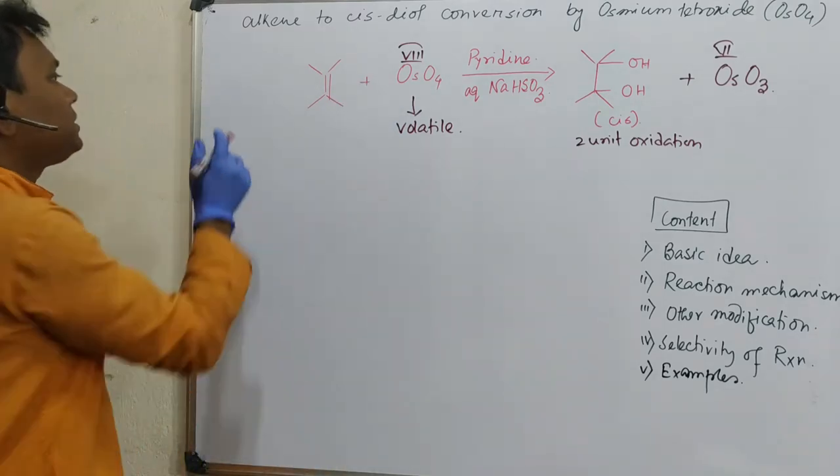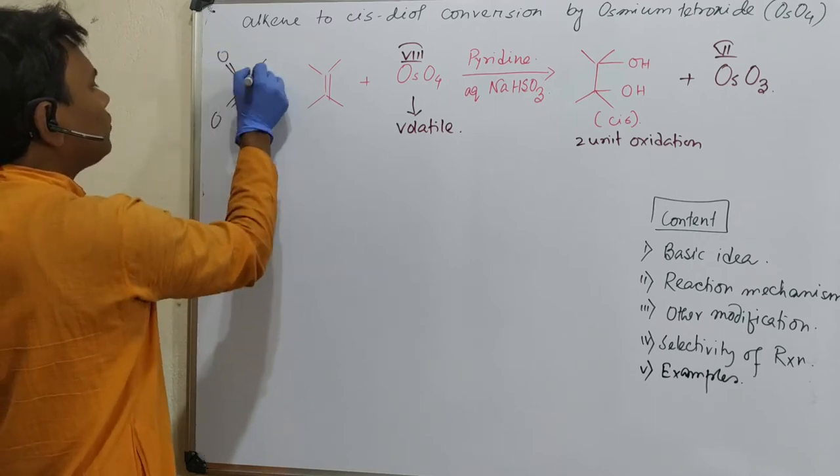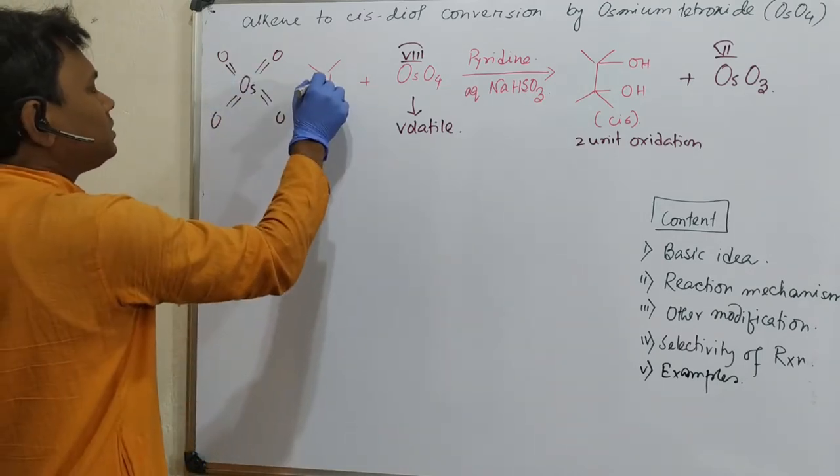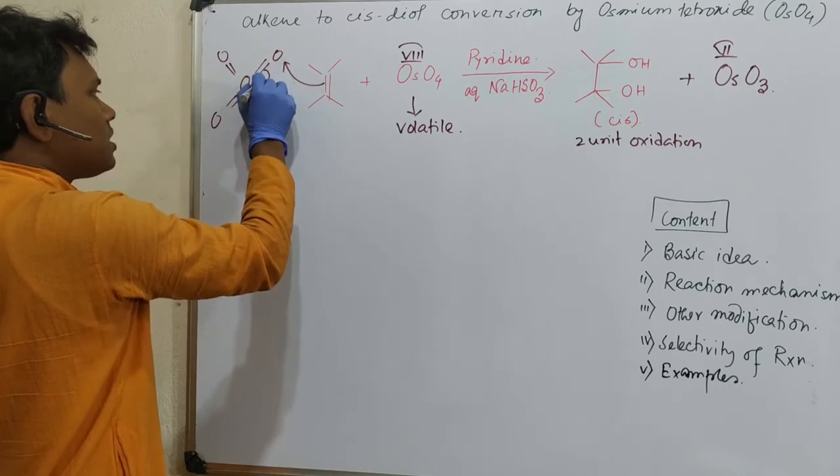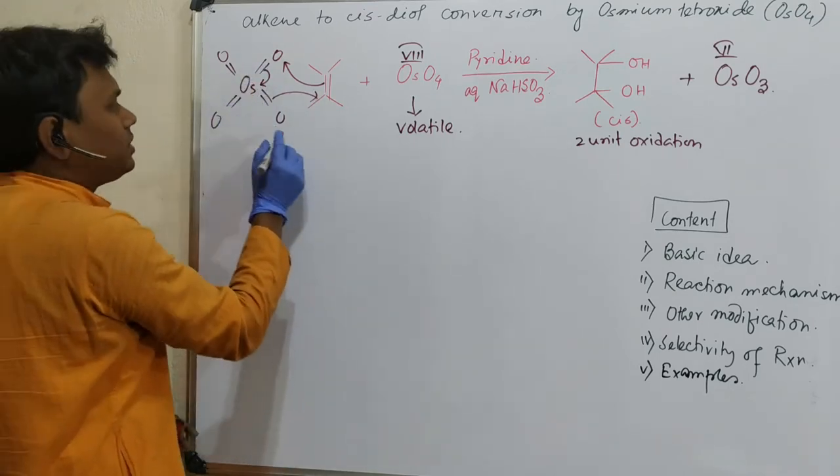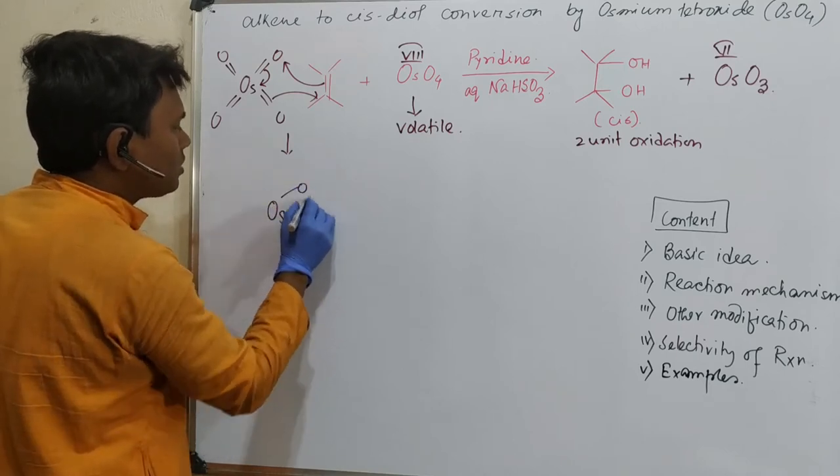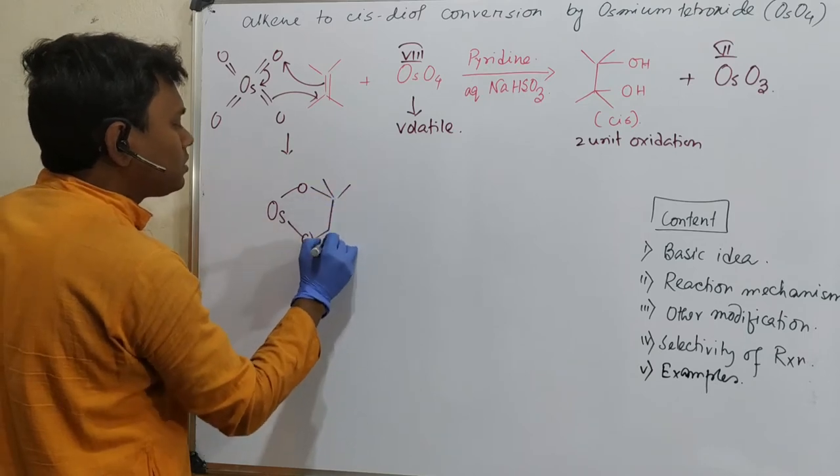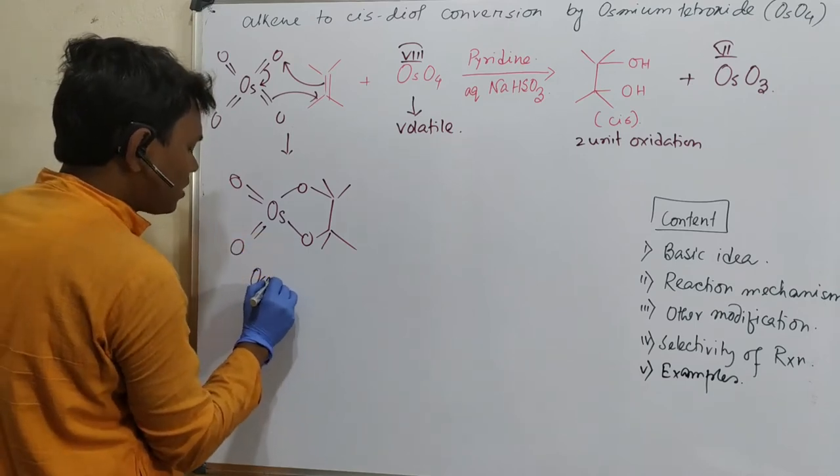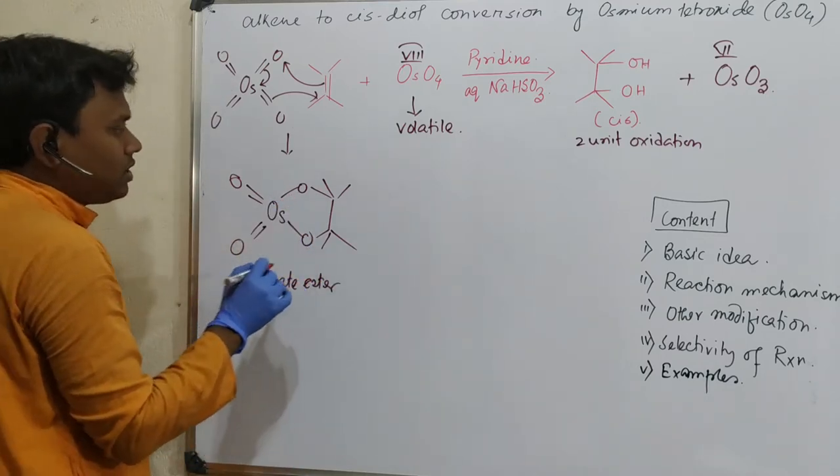Actually if we write it better way, this is osmium. Four double bonds, actually it is a plus eight oxidation state. So what happens? See this bond coming to osmium means this is a reduction. What it produces? This is actually an osmate ester. Why I am saying? This is an alcohol linkage. It is an ester, organic ester.